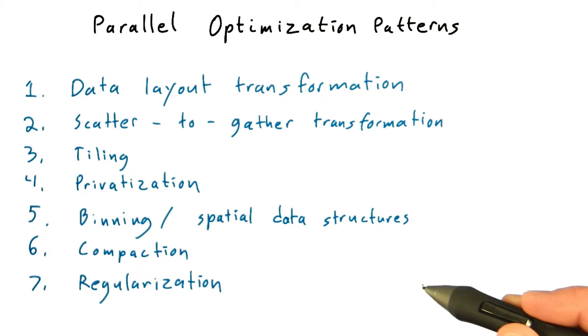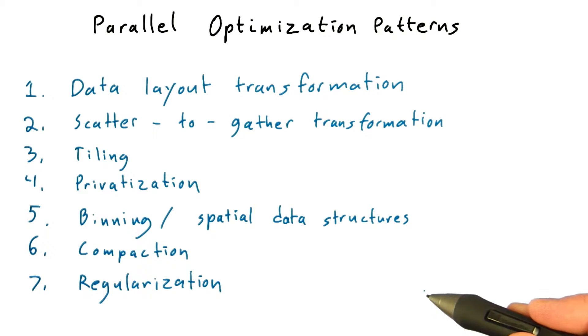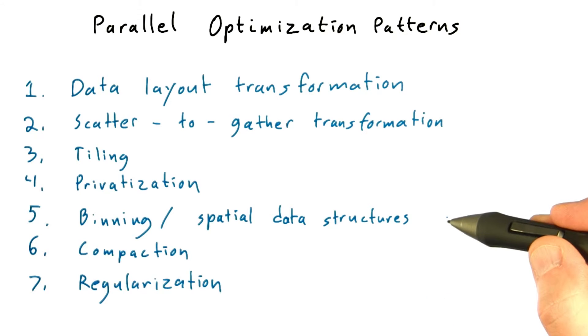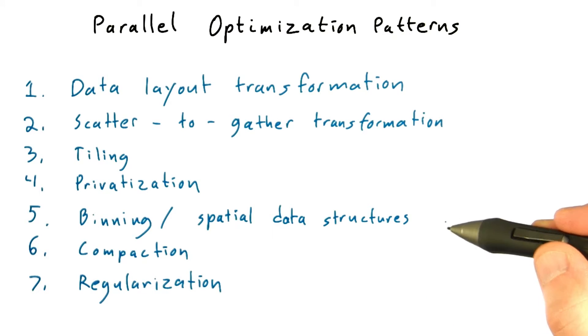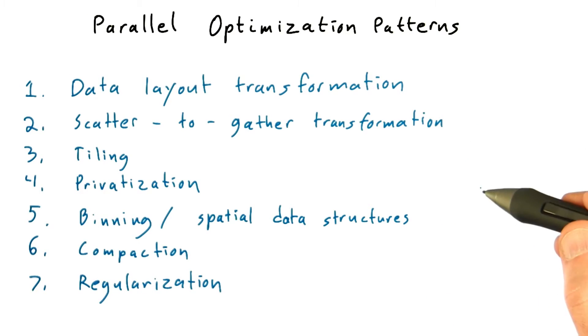And regularization, where we can extract regular parallelism from irregular parallelism, often in the face of strategies like binning in spatial data structures or the scatter-to-gather transformation.